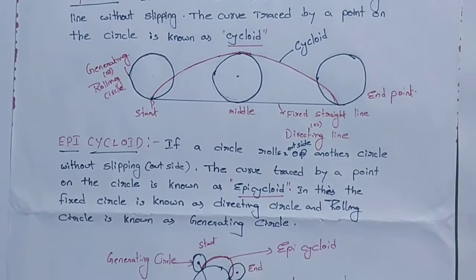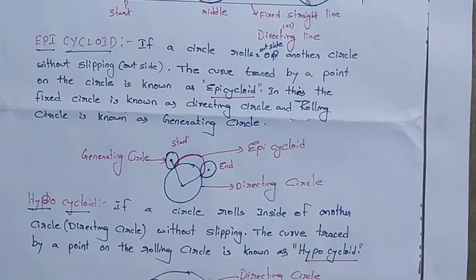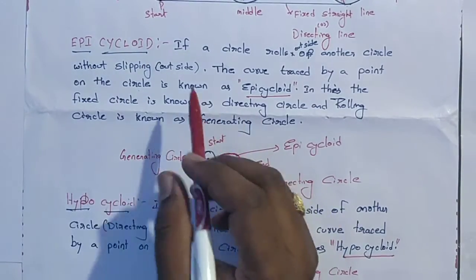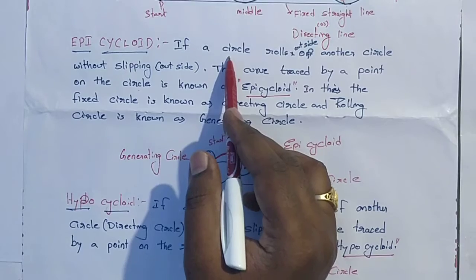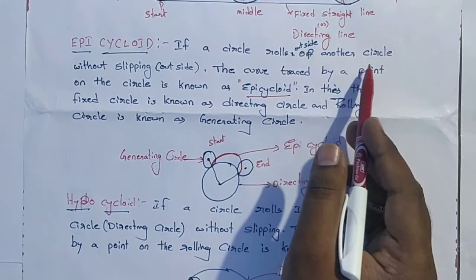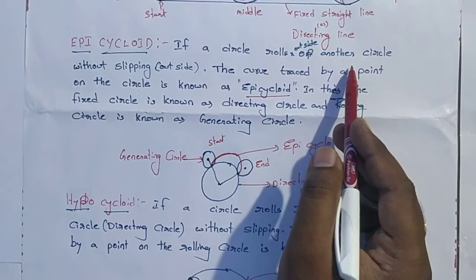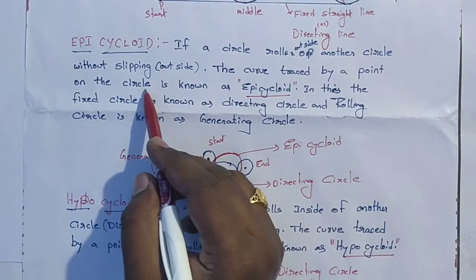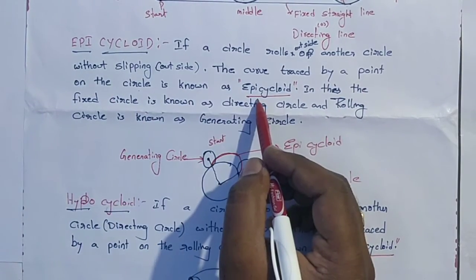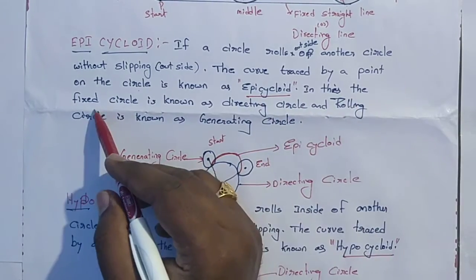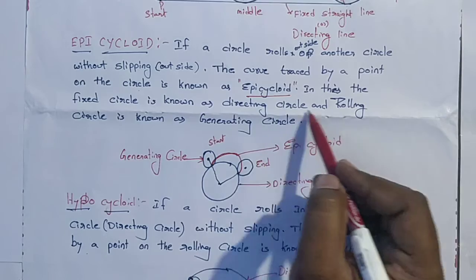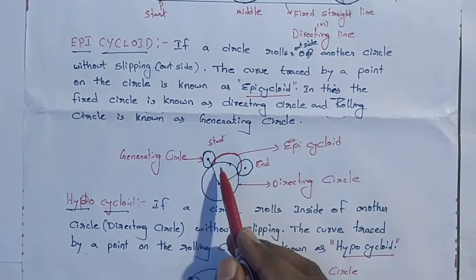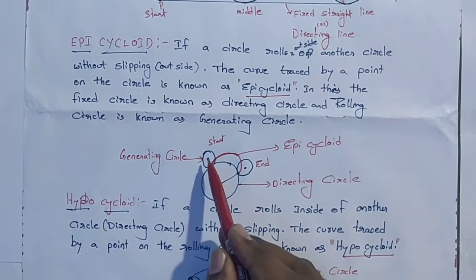Coming to epicycloid: an epicycloid is a curve generated when a circle rolls outside of another circle without slipping. The curve traced by a point on the rolling circle is known as an epicycloid. The fixed circle is known as the directing circle, and the rolling or rotating circle is known as the generating circle.